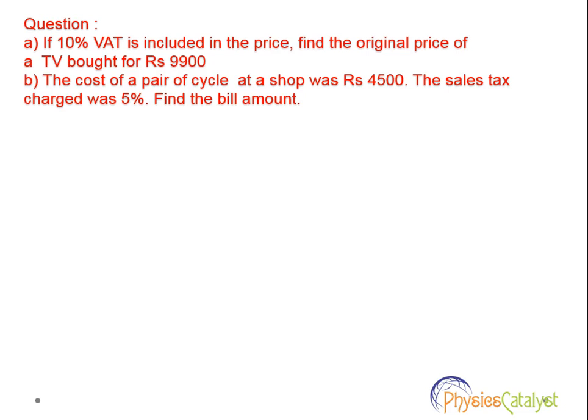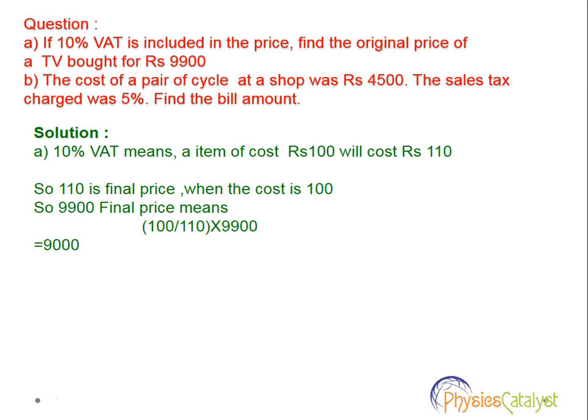Solution to question one: VAT is charged at 10% and the final price is rupees 9900. We need to find the original price. 10% VAT means an item costing rupees 100 will cost rupees 110. So if 110 is the final price, the cost is 100. Therefore, if the final price is 9900, the original cost is 100 divided by 110 into 9900, which equals rupees 9000.